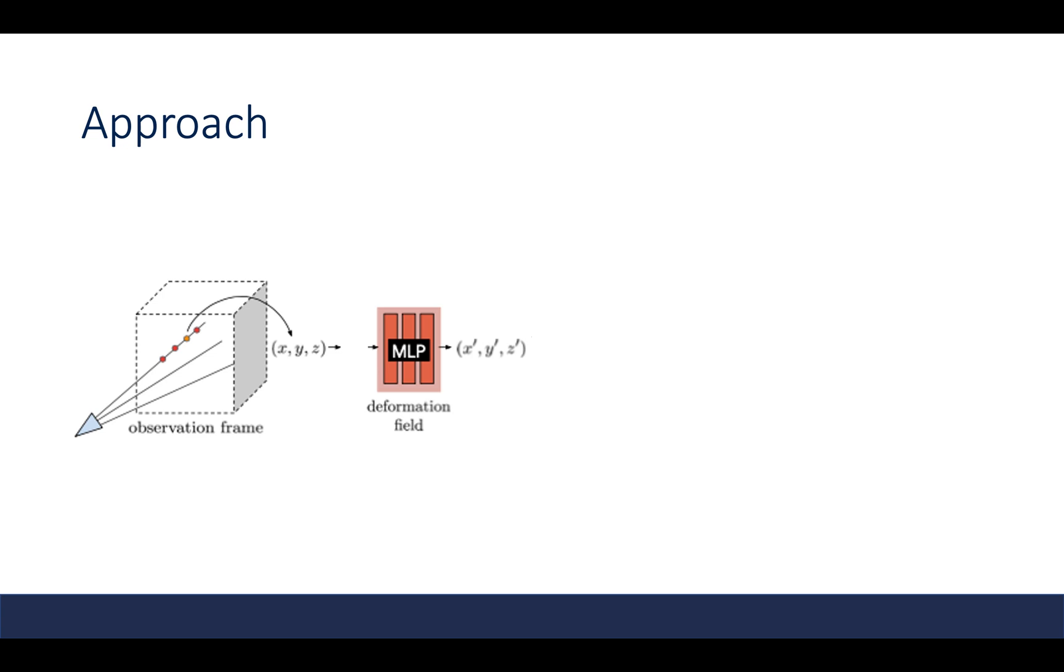We visualize the process as shown in this illustration, where we have an observation frame. And for each ray, we can sample points denoted as x, y, and z. We want to map it to the canonical frame coordinates x prime, y prime, and z prime through a deformation field.